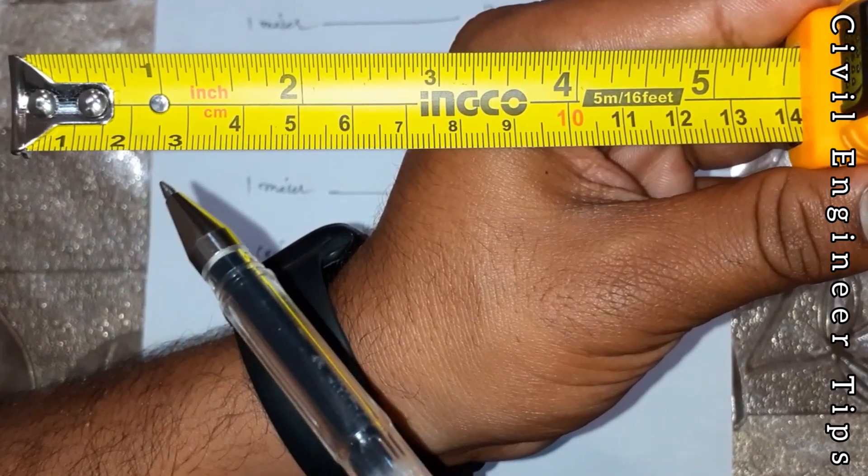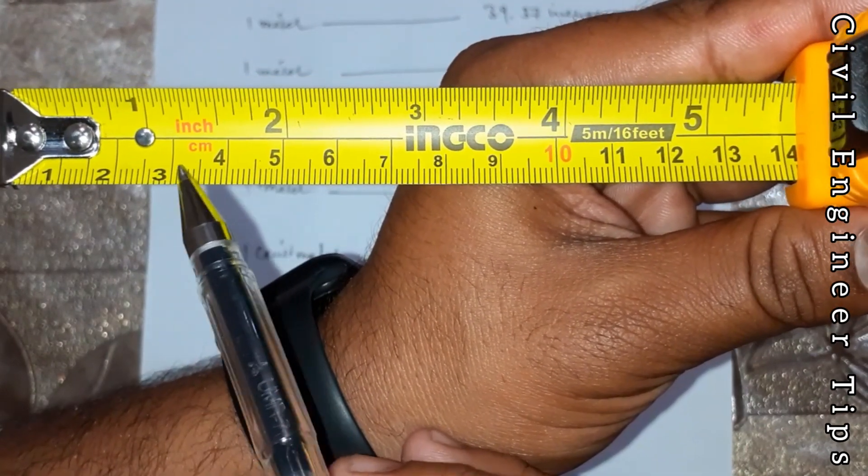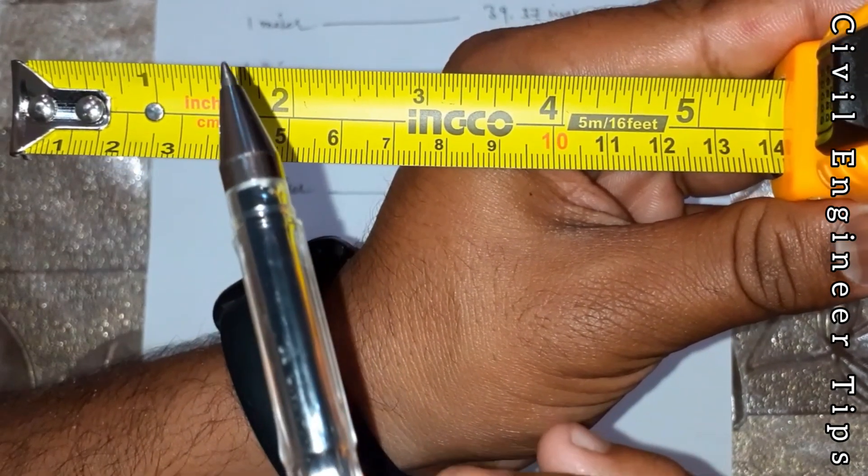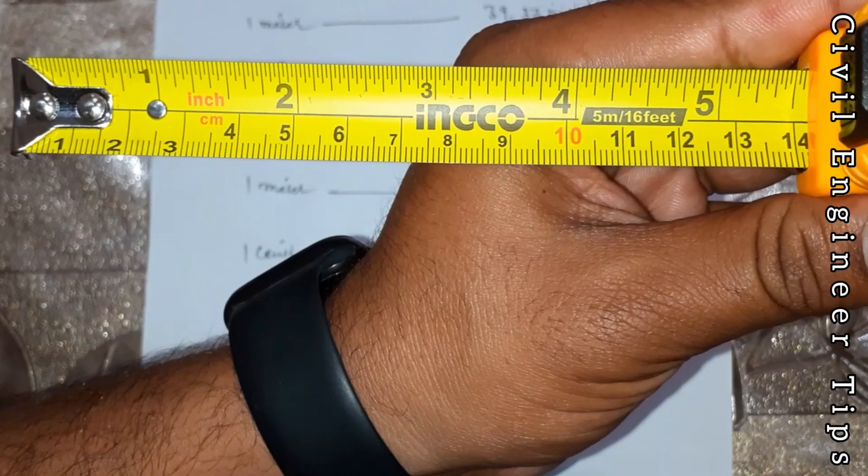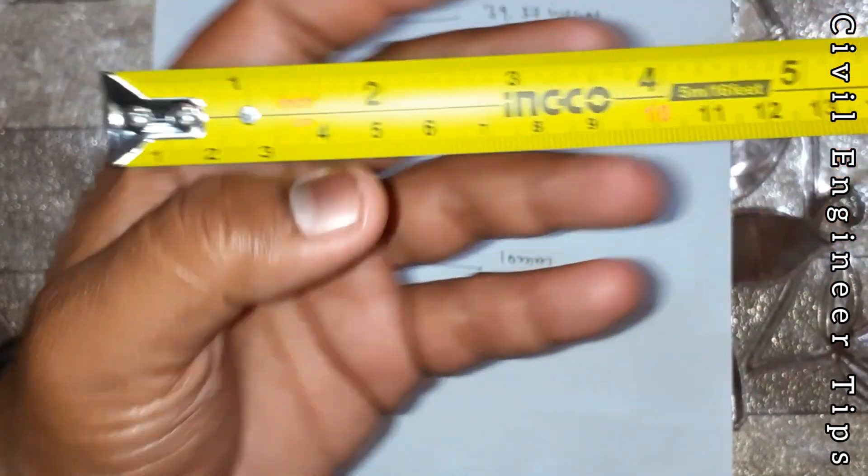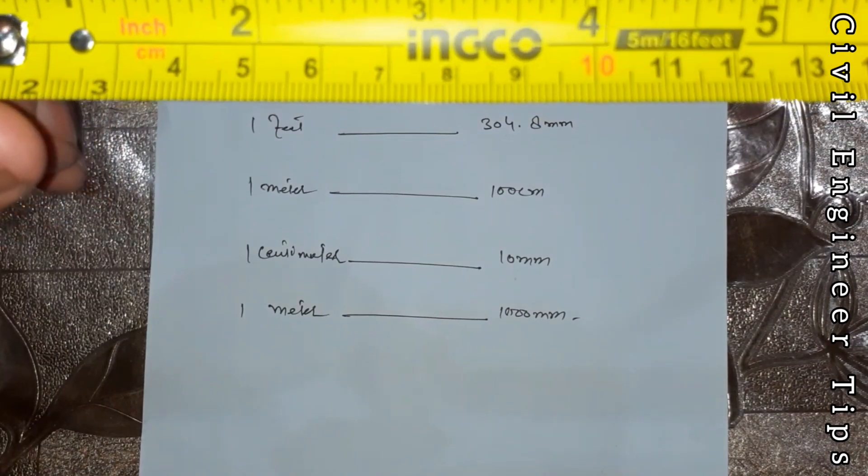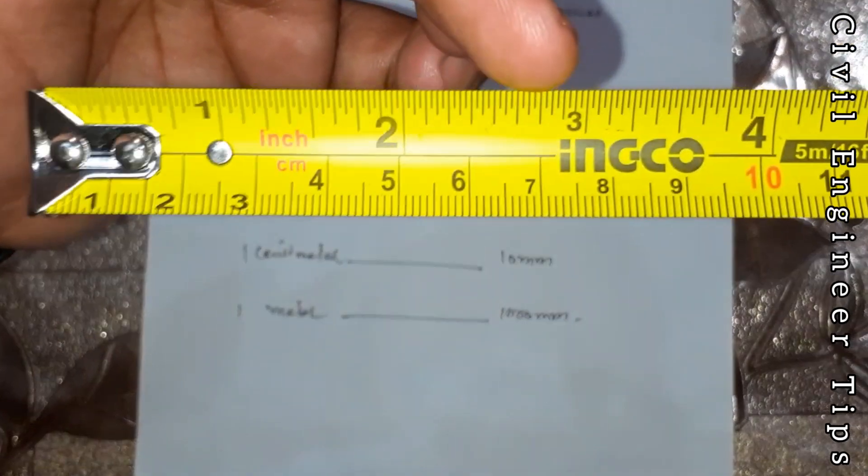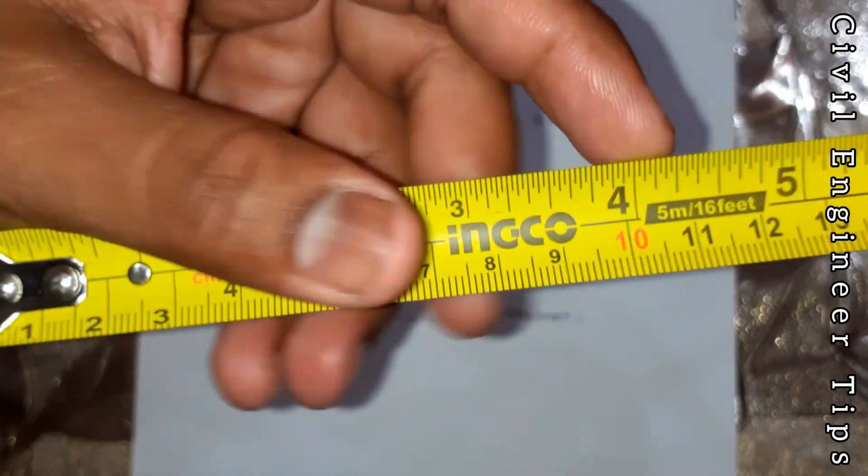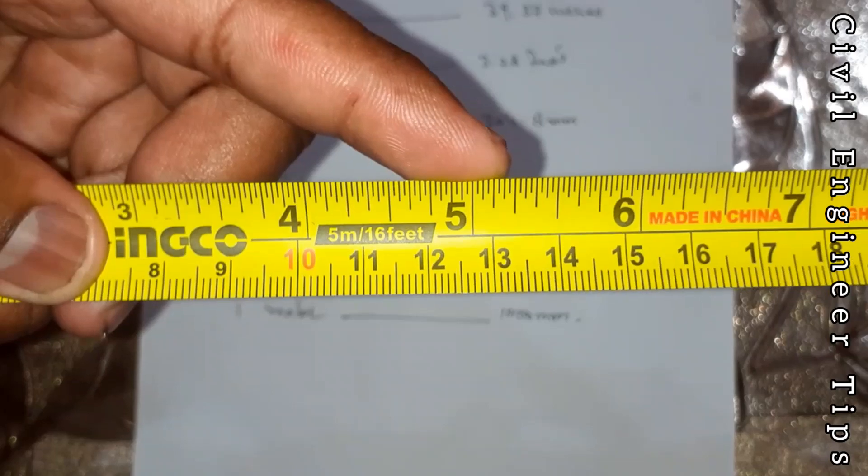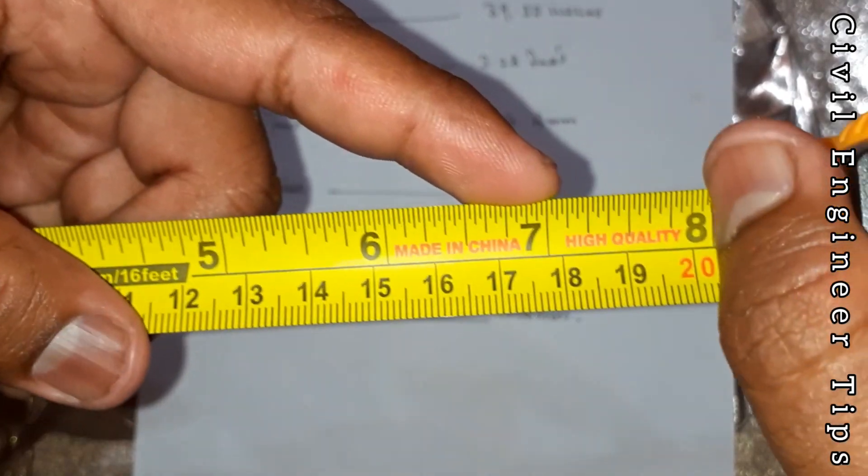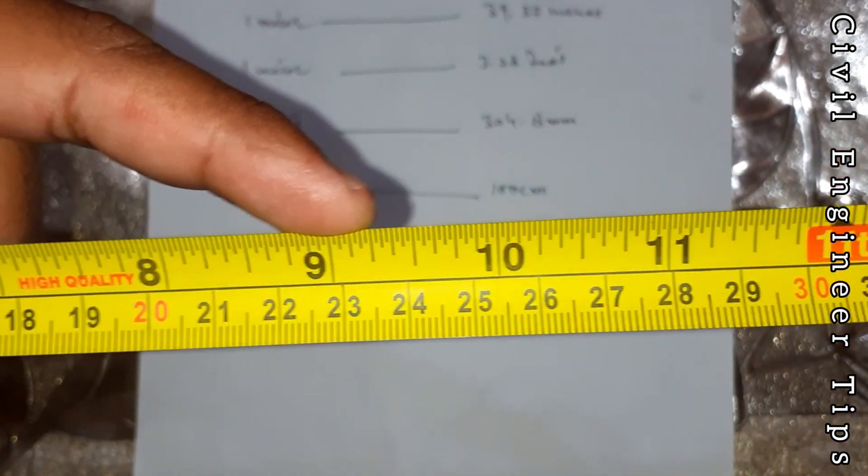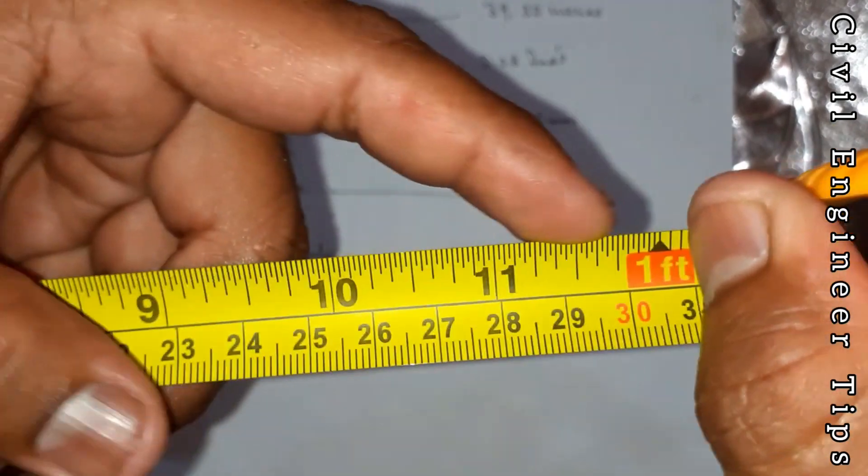And under this is in centimeters, but I will clear it all according to this. Friends, you can see the reading on the top: 1 inch, 2, 3 inch, 4 inches, 5, 6, 7, 8, 9, 10, 11, and 12.